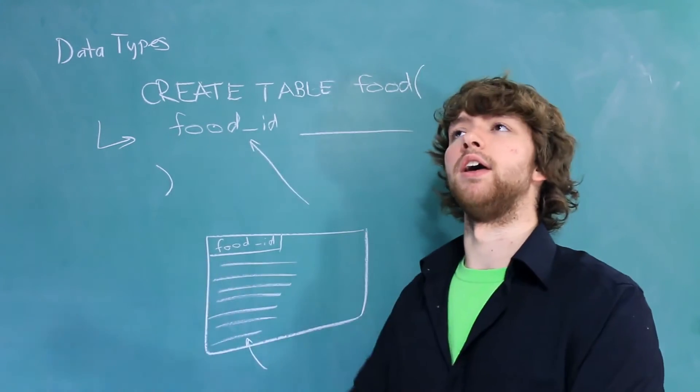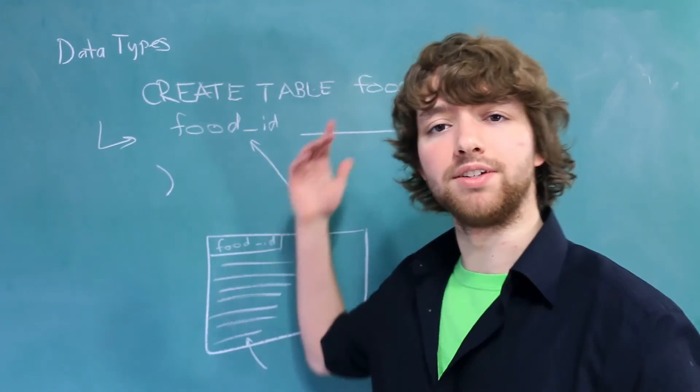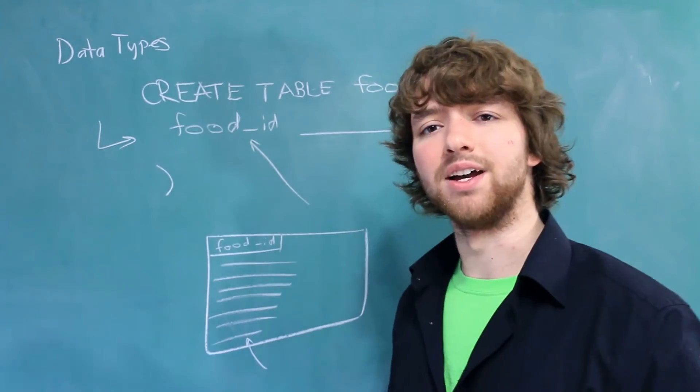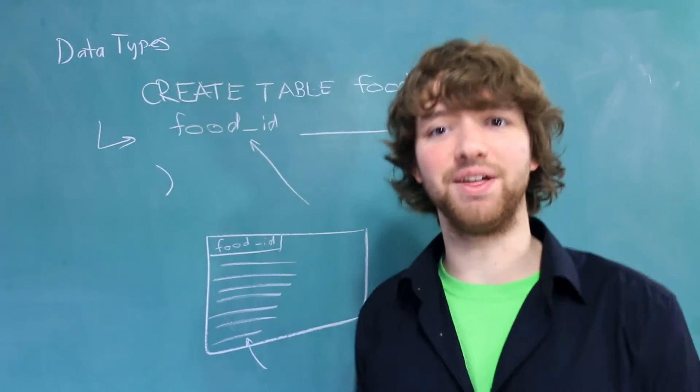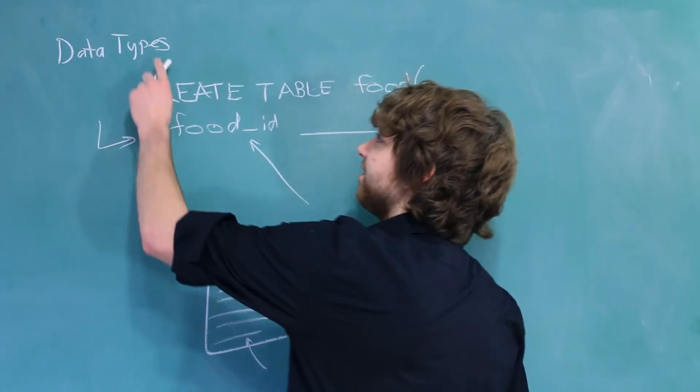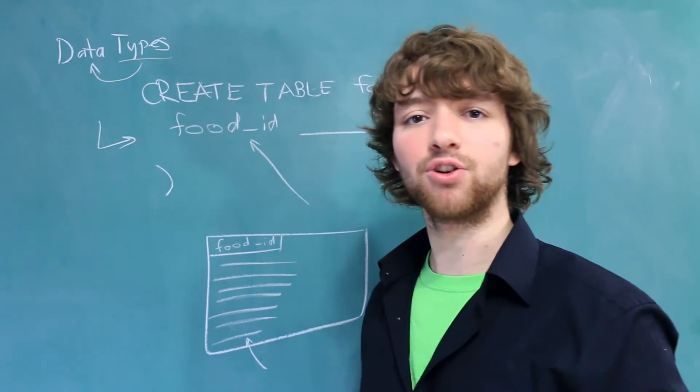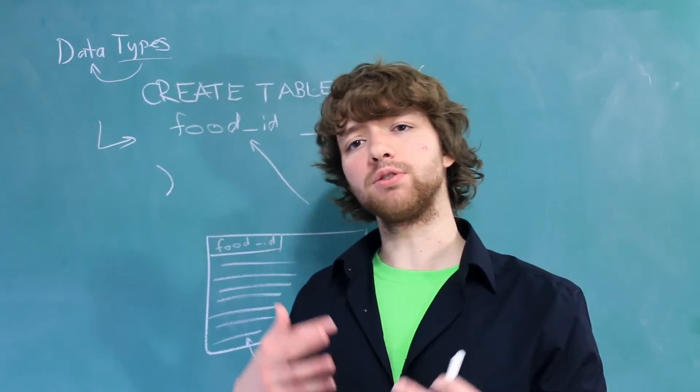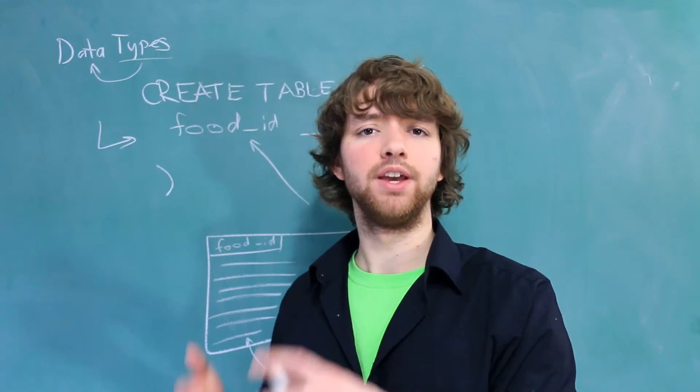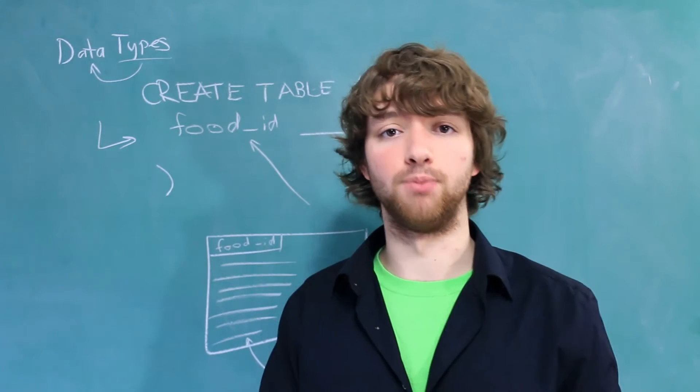But I might be jumping ahead. Did we really figure out what a Data Type is? A Data Type, put simply, is the Type of Data. I know that totally wasn't helpful, but think of the Type of Data. And we can categorize the types into three main categories. These are like the three categories we start with, and then later hopefully we'll learn some more.